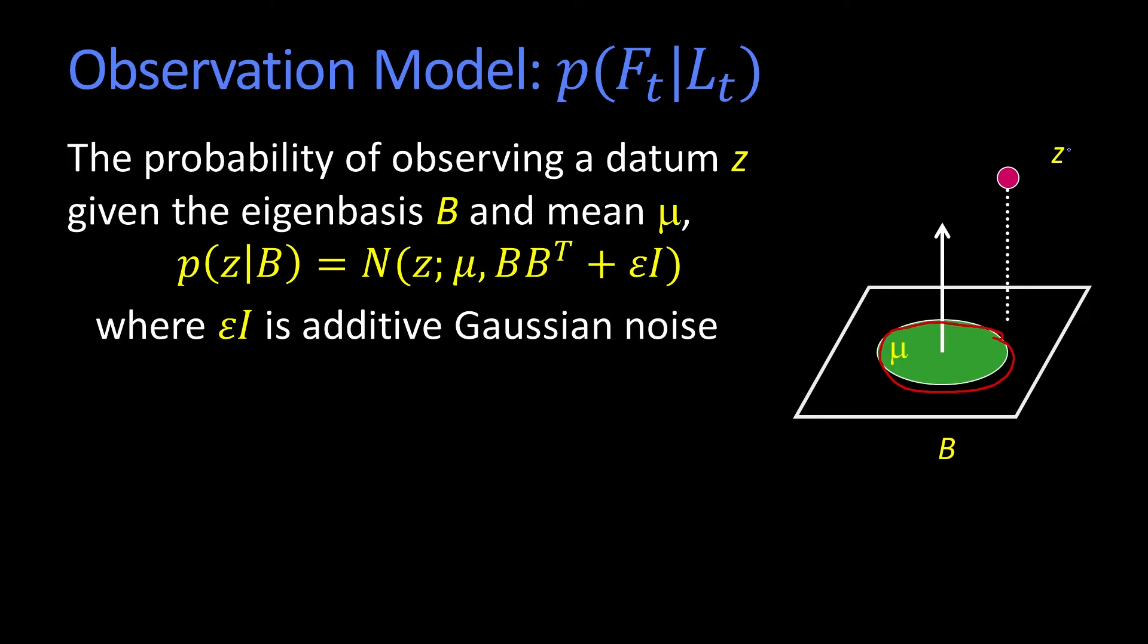And now I have some observation Z here. What this equation is saying here is that the probability of getting some point Z, our observation, is distributed about the mean.